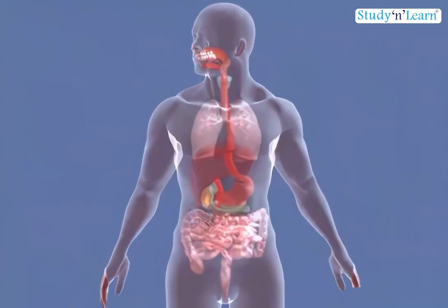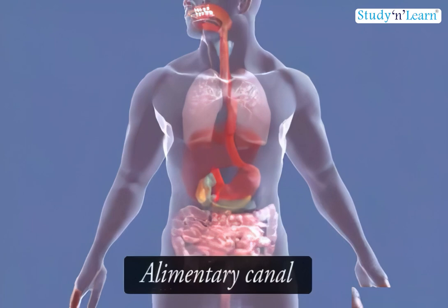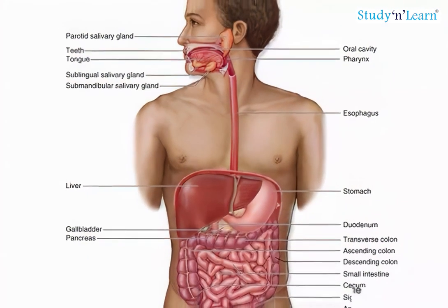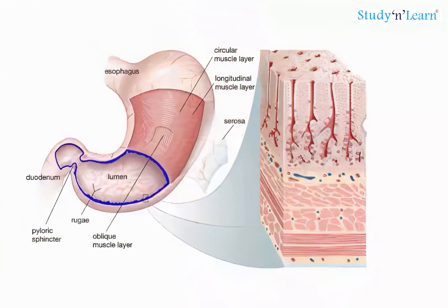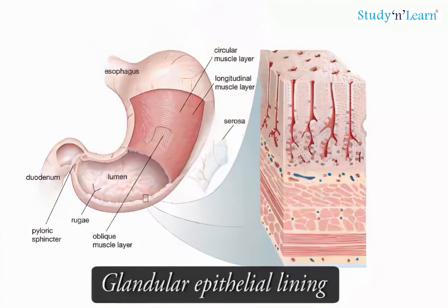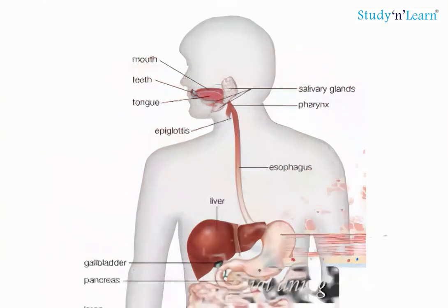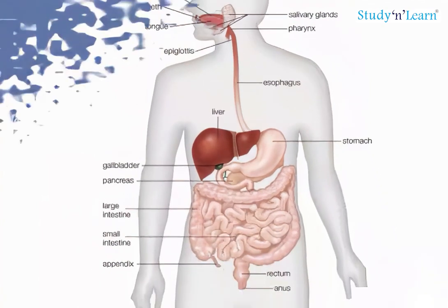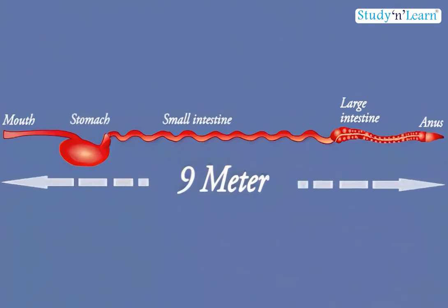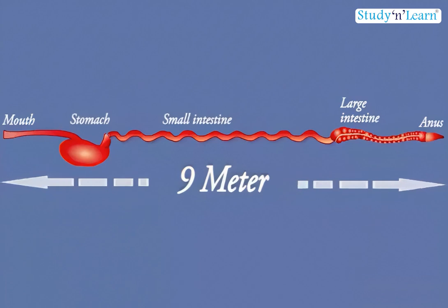The human digestive system consists of an alimentary canal and associated digestive glands. The alimentary canal is a long tube with muscular walls, glandular epithelial lining, and varying diameter. It extends from the mouth to the anus. When uncoiled, the alimentary canal measures nearly 9 meters long, and the ducts of several digestive glands open into it to secrete their respective digestive secretions.